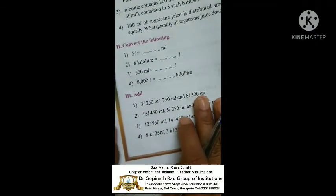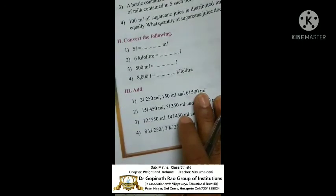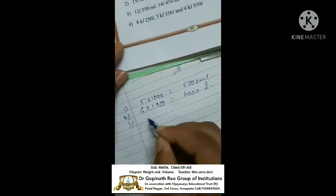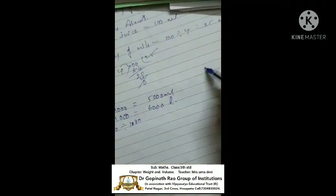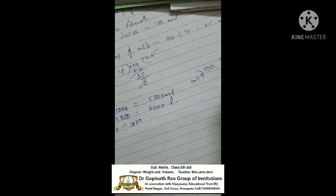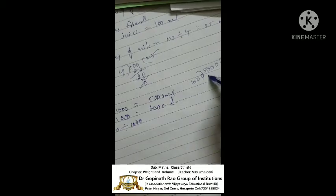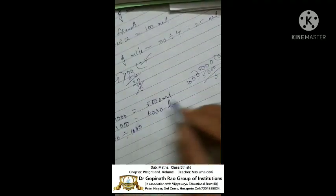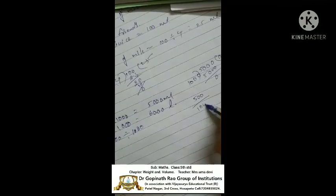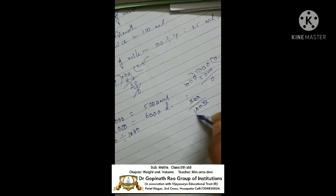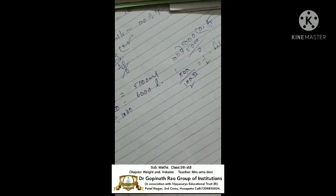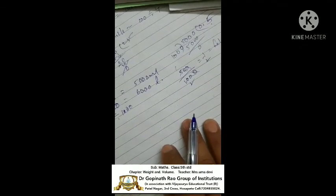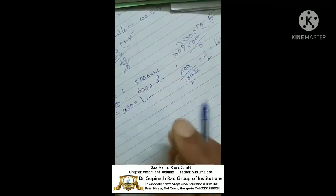Third conversion: 500 millilitres equals how many litres? Millilitres is small, litres is big, so we use division — 500 divided by 1000. Simplifying 500 by 1000: cancel zeros to get 1 by 2, which equals 0.5. So 500 millilitres equals one-half litre, that is half a litre.